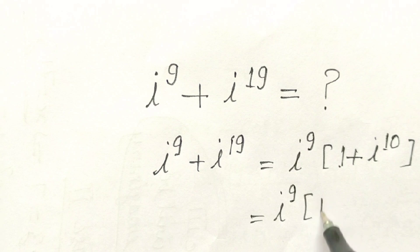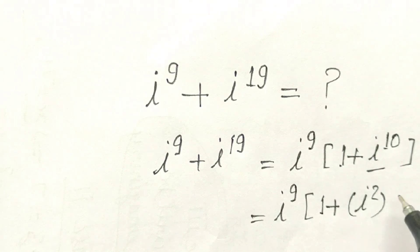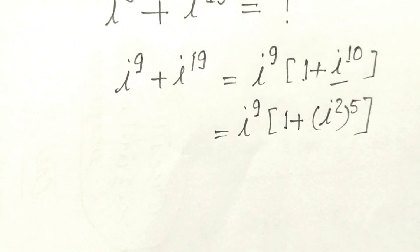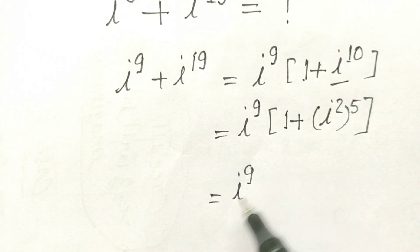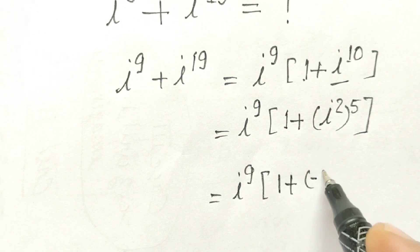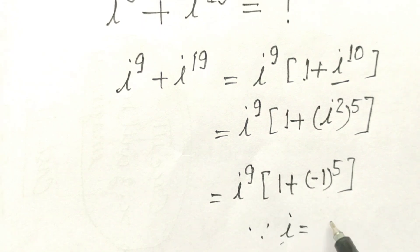Now, i^9 times (1 + i^10) equals i^9 times (1 + (i^2)^5). Since i equals the square root of minus 1, i^2 equals minus 1.